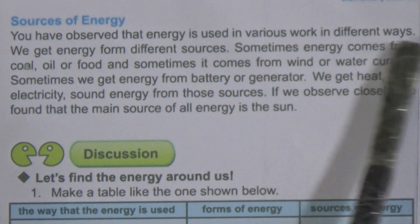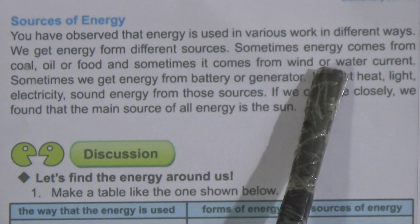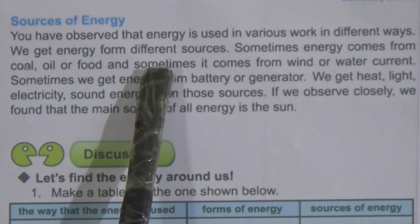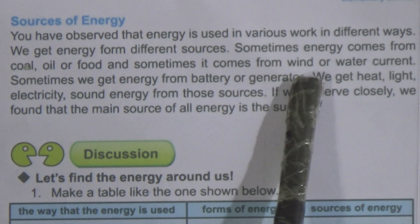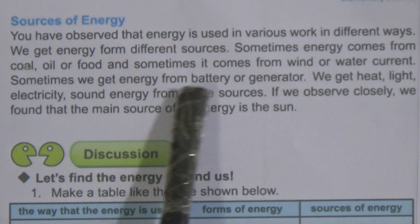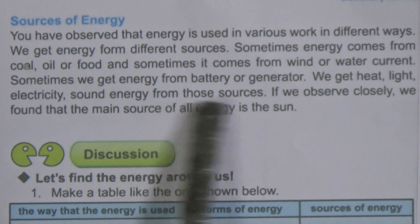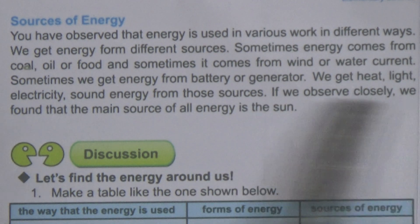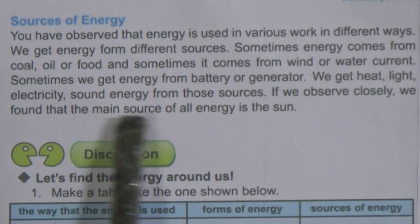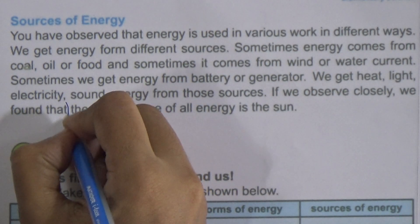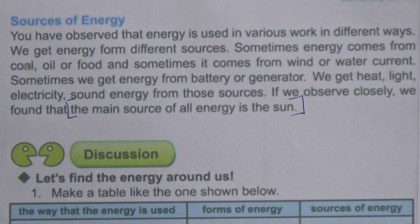You have observed that energy is used in various work in different ways. We get energy from different sources. Sometimes energy comes from coal, oil, or food, and sometimes it comes from wind or water currents. Sometimes we get energy from a battery or generator. We get heat, light, electric, and sound energy from those sources.